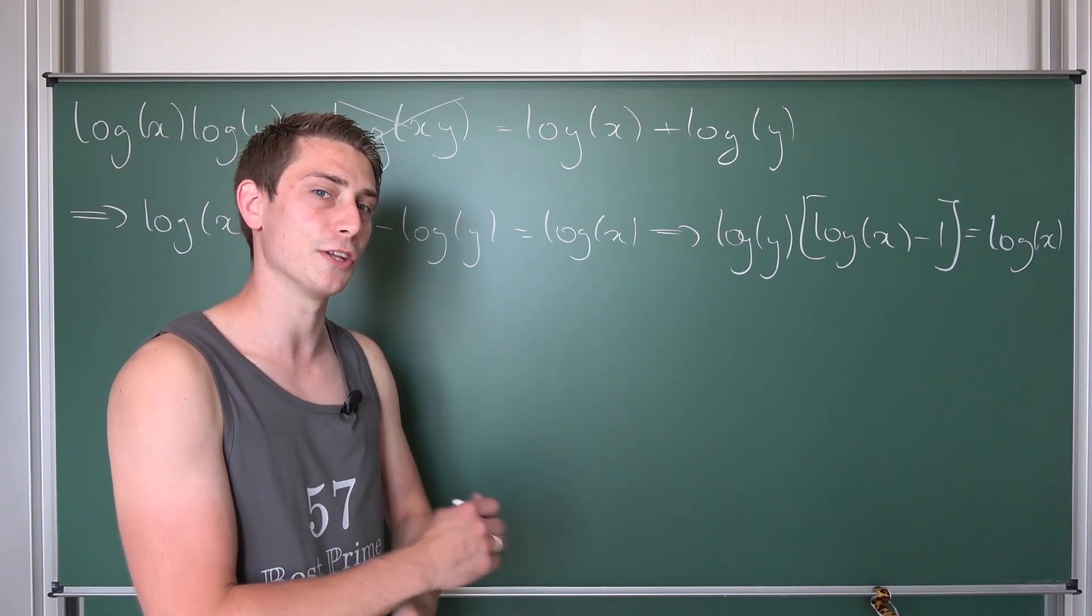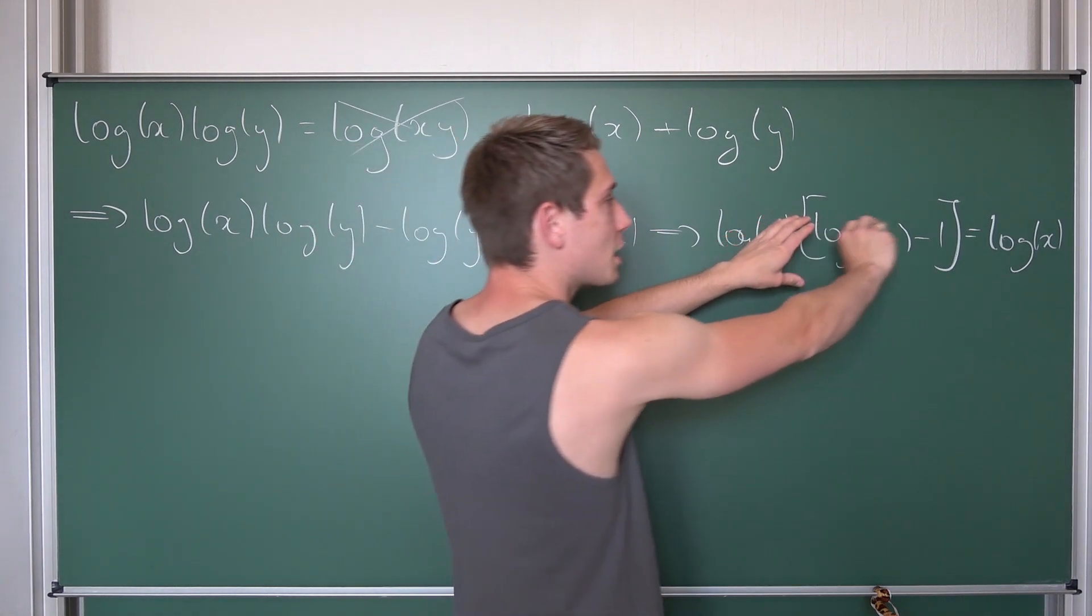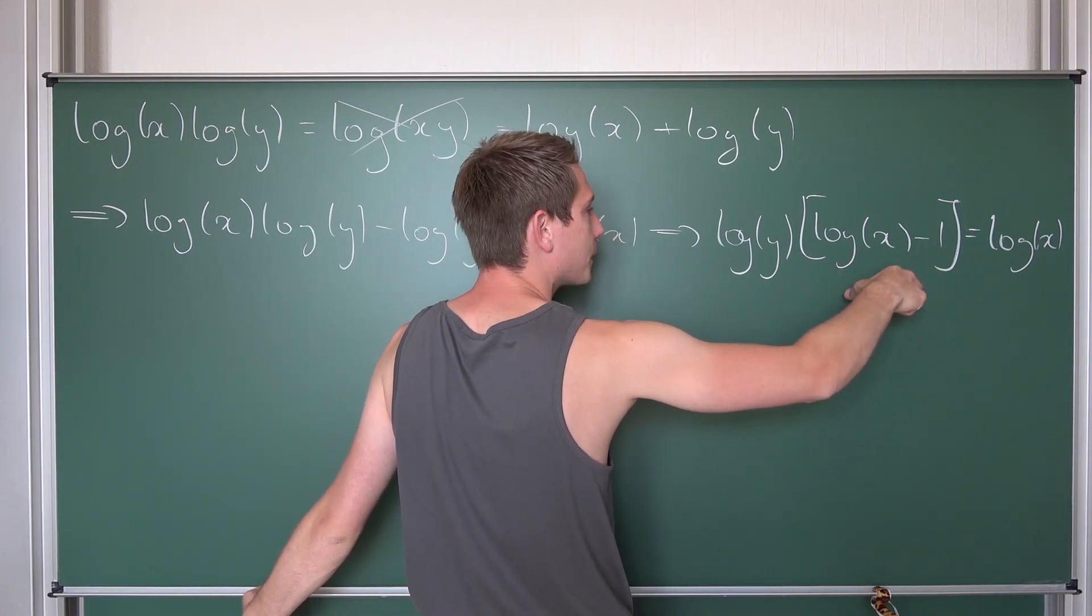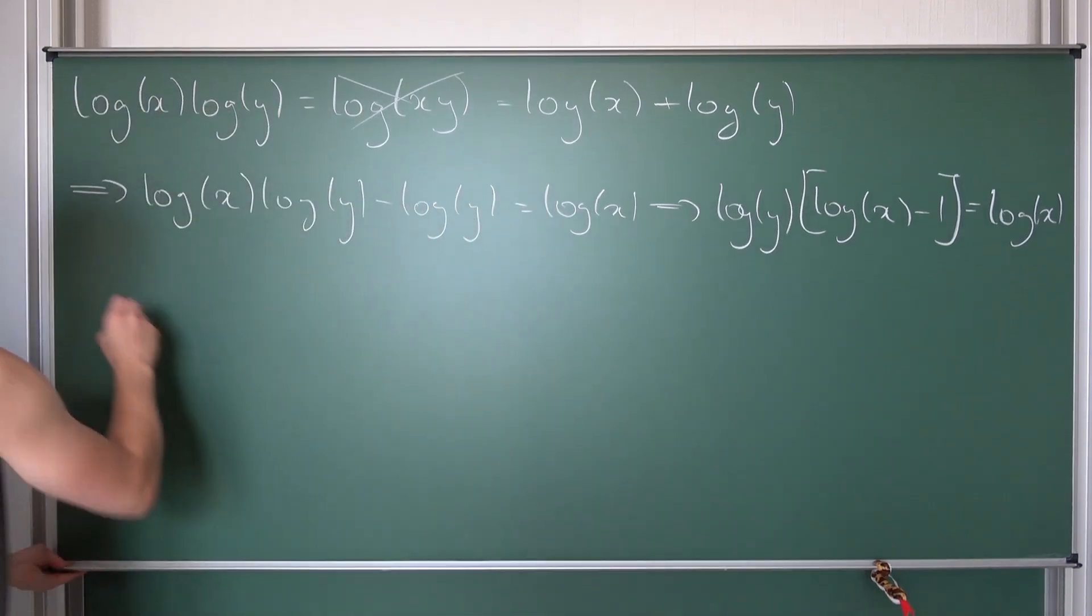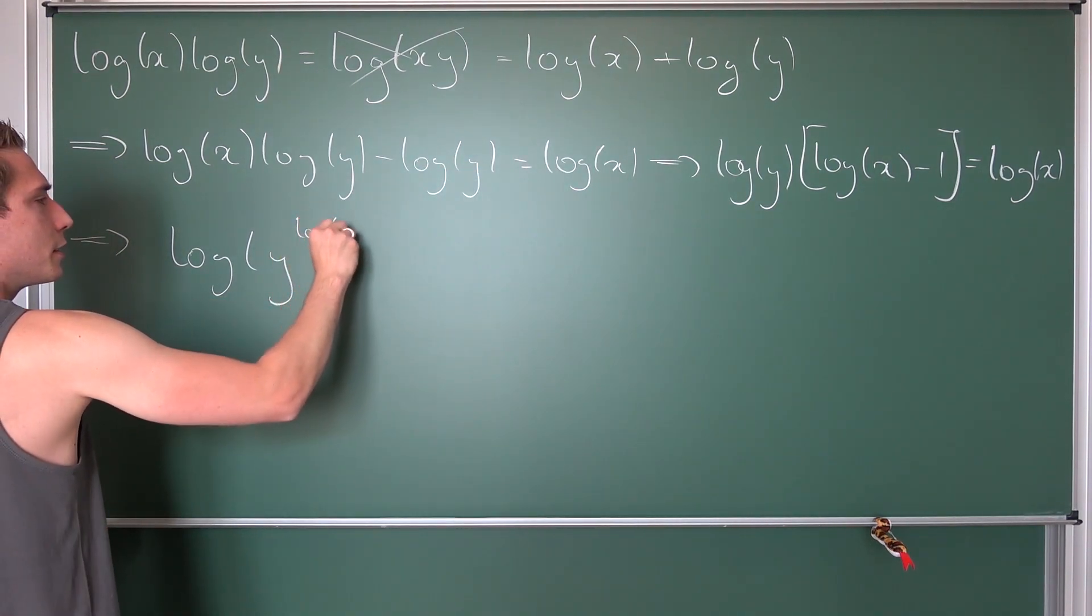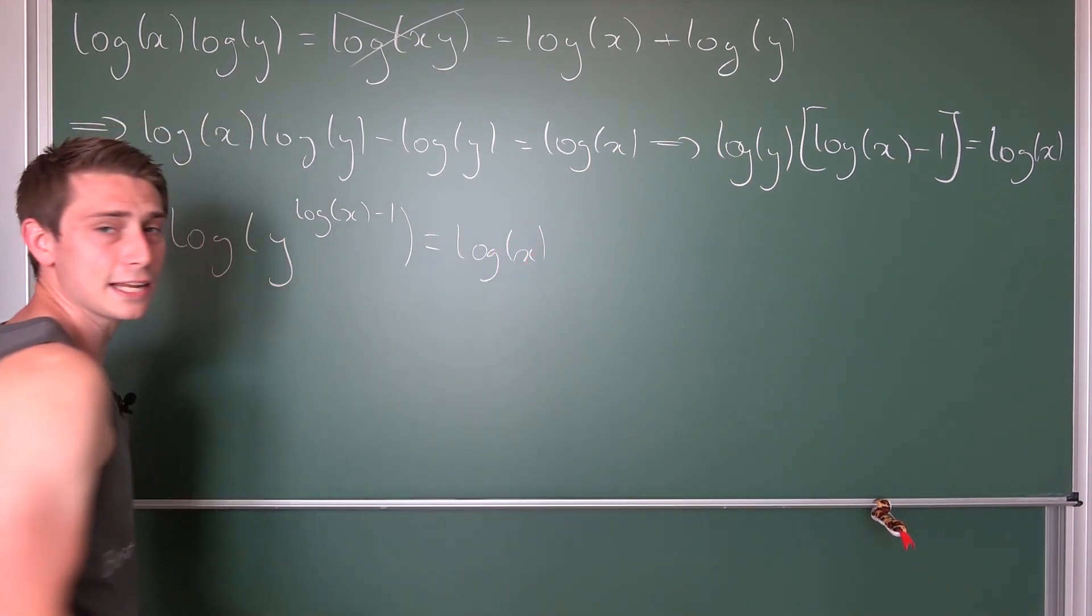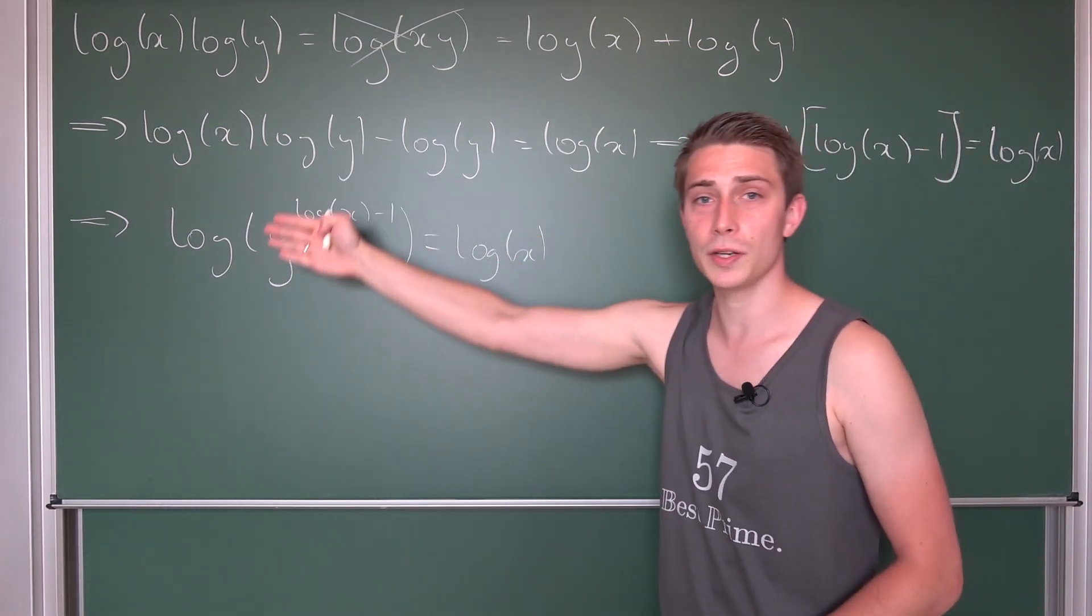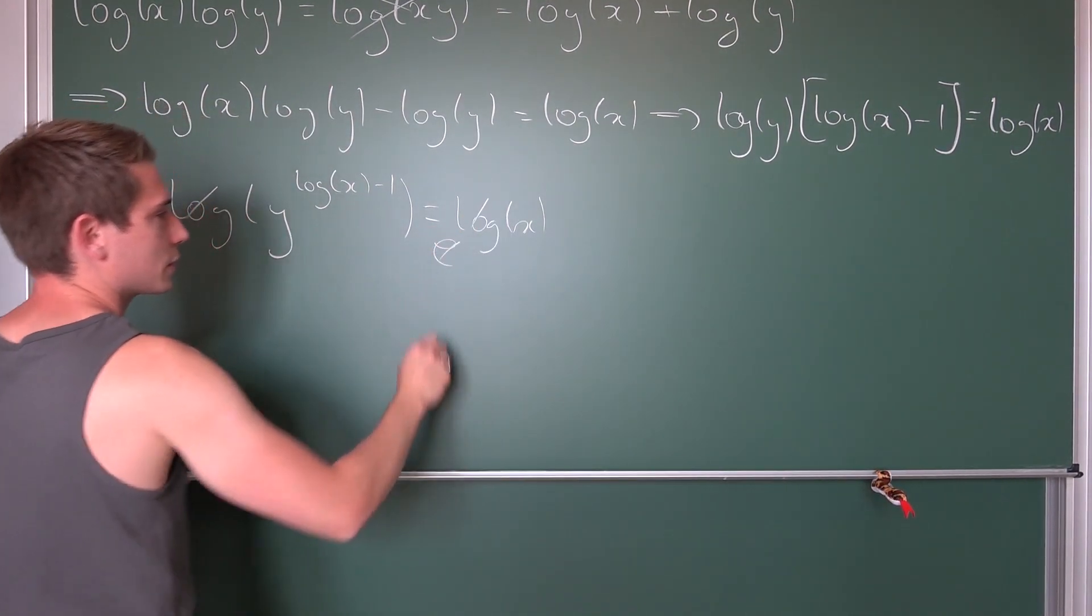But we are going to go a step further and make use of the logarithm property. That logarithm of y times something, let's call it a, is the logarithm of y to the a power. Meaning we are going to bring this factor that we have here into the inside as an exponent, leaving us with the log of y to the log of x minus 1 power being equal to the log of x. And now it's way safer to exponentiate on both sides because now we have both sides with respect to logarithm. And now we can use the inverse function basically base e on both sides. This is going to cancel out and then this is going to cancel out.